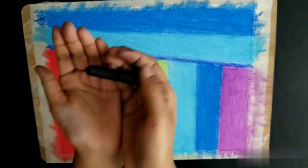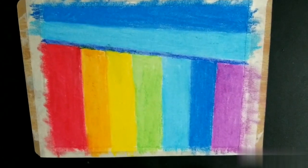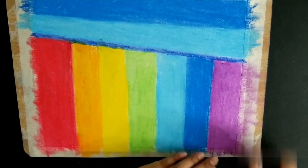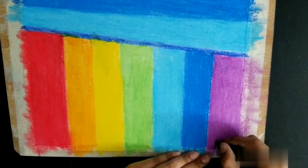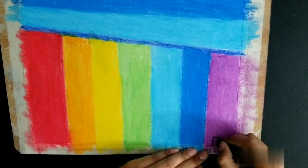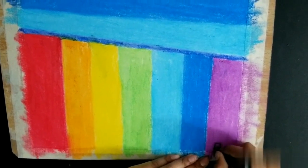After you smooth it all out, now we need our black and we're going to draw the trees. First we need to make a rectangular box like this, and we're going to color it in.